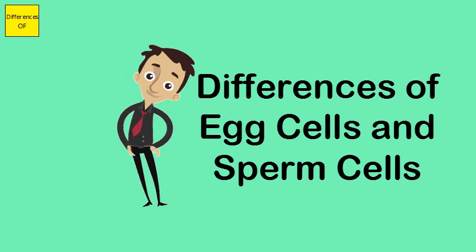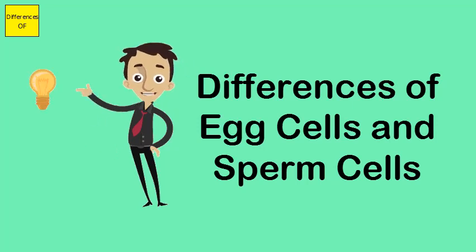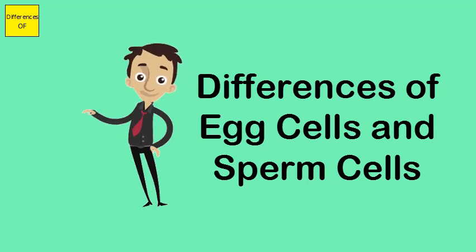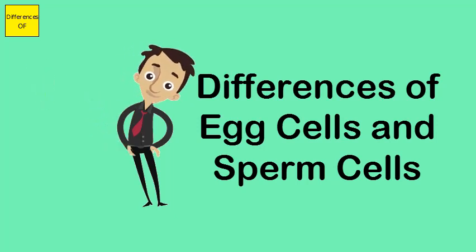Egg cells have a nucleus which is dissolved, whereas sperm cells have a small nucleus. Egg cells contain a large volume of cytoplasm, or cell fluid, until just earlier than conception, while sperm cells contain a small volume of cell fluid.